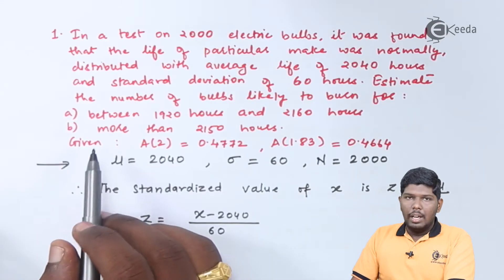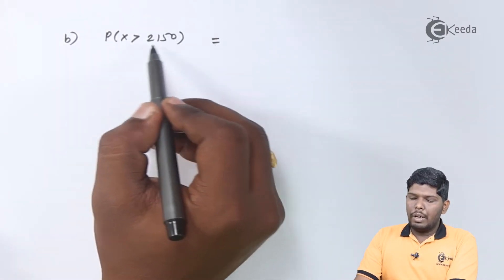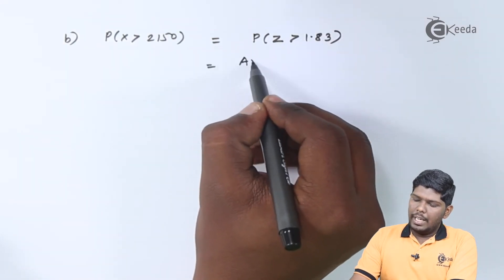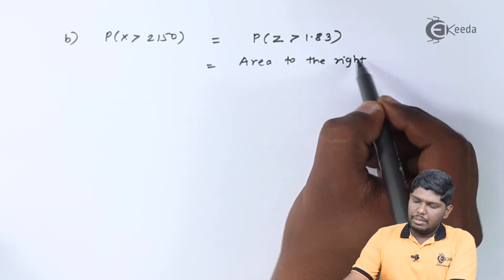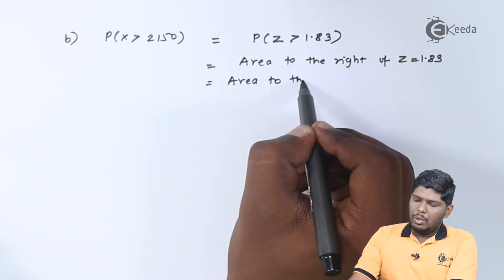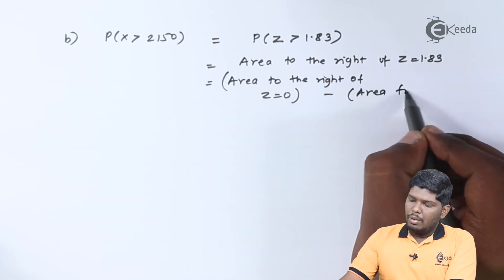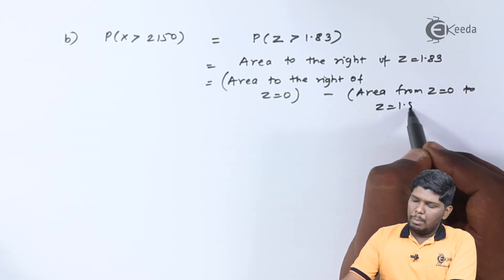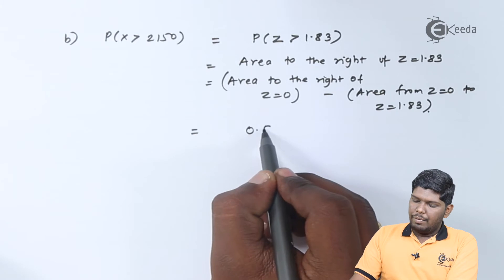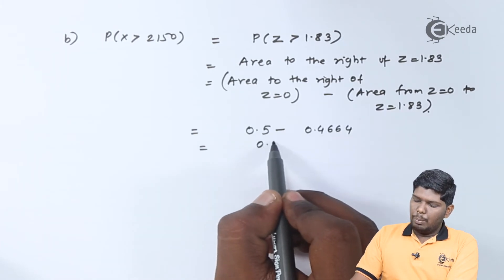In the second part, we are asked for more than 2150 hours. For x > 2150, the standardized value z > 1.83. This equals the area to the right of z = 1.83, which is: area to the right of z = 0, minus the area from z = 0 to z = 1.83. The area to the right of z = 0 is 0.5, and the second value is 0.4664, giving 0.5 − 0.4664 = 0.0336.